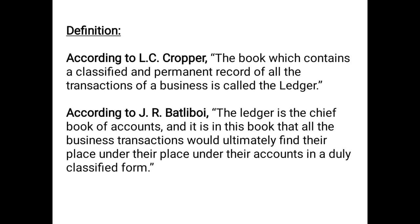There are two definitions given by two different people; you can use any definition which you feel is easy to remember. According to L.C. Cropper, the book which contains a classified and permanent record of all the transactions of a business is called the ledger. According to J.R. Batliboi, the ledger is the chief book of accounts and it is in this book that all the business transactions would ultimately find their place under their accounts in a duly classified form. You can use any one definition which you think is easy.